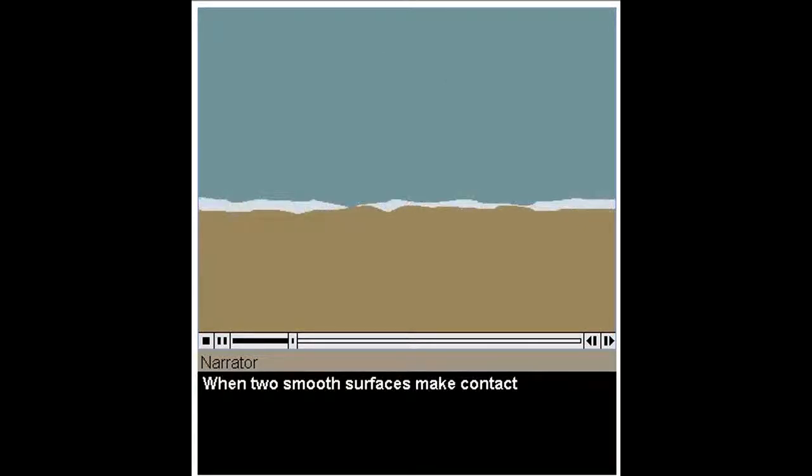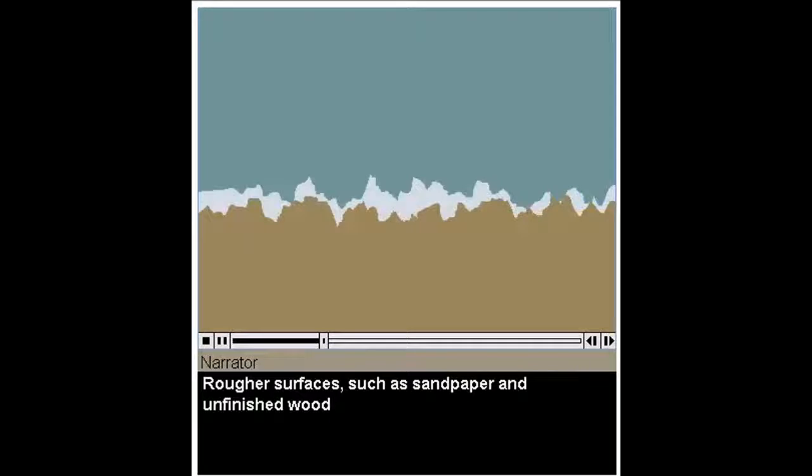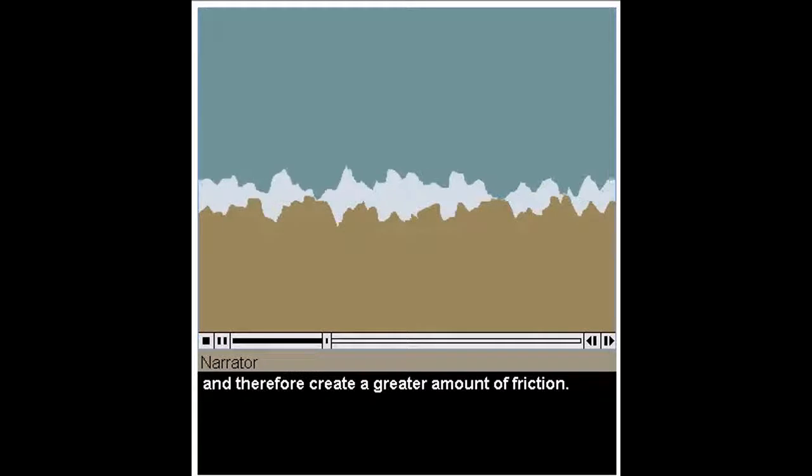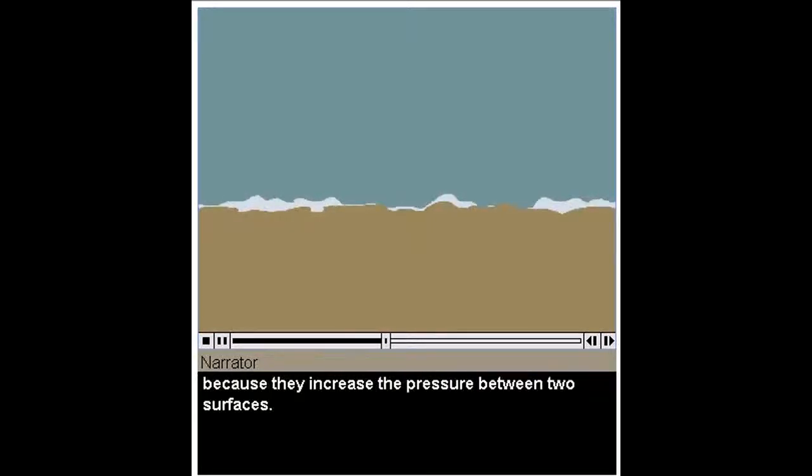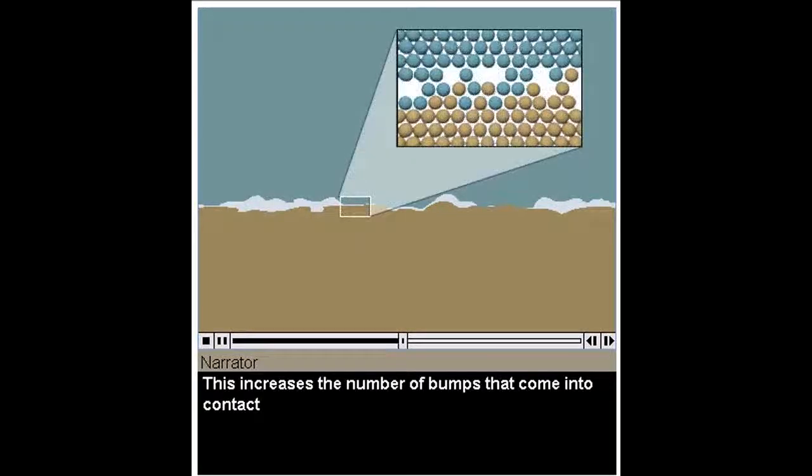When two smooth surfaces make contact, such as a cardboard box on a waxed floor, there is often less friction, because there are smaller and fewer bumps on each side. Rougher surfaces, such as sandpaper and unfinished wood, have bigger and more bumps, and therefore create a greater amount of friction. Heavier objects create more friction, because they increase the pressure between two surfaces. This increases the number of bumps that come into contact, and the number of bonds that form between atoms and molecules.